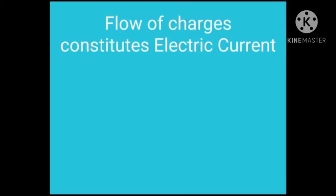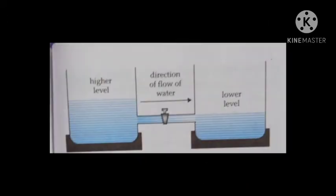When two vessels that contain different amounts of water are joined near their bases, as you can see in the figure, there are two vessels joined near their bases. Water flows from one vessel to the other — from the vessel containing water at a higher level to the vessel containing water at a lower level.